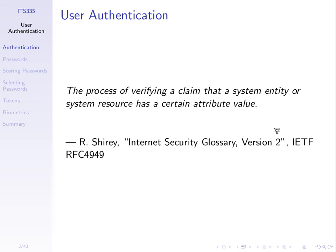What do we mean by user authentication? It is the process of verifying a claim that a system entity or system resource has a certain attribute value. Some system entity — maybe a human or a software process — claims to have some attribute, claims to be a certain person, claims to be able to do something. User authentication is about verifying that claim: is what they're claiming true or not? The obvious case is a human user wanting to access a computer, claiming to be Steven, and the computer must verify whether this person is Steven or someone pretending to be him.